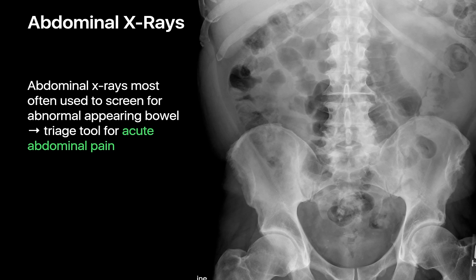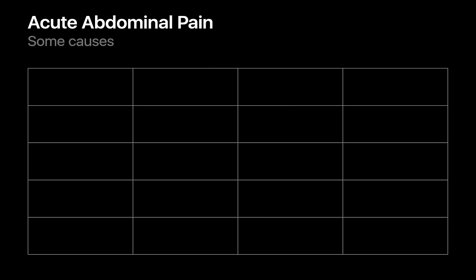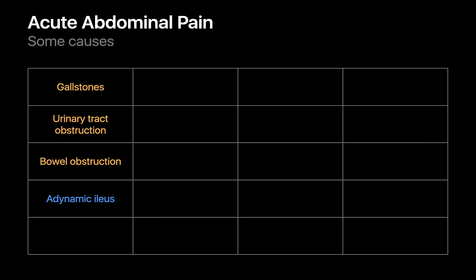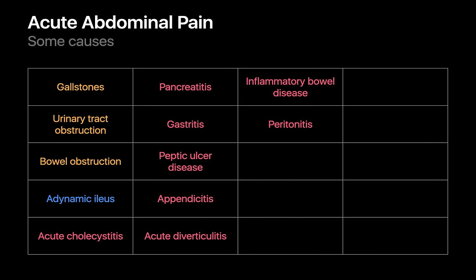That's why abdominal x-rays, despite their limitations, remain a useful triage tool for evaluating patients with acute abdominal pain. The differential diagnosis for acute abdominal pain includes obstructive disorders like gallstones, urinary tract calculi, and bowel obstruction; neurogenic disorders like adynamic ileus; and inflammatory disorders such as acute cholecystitis, pancreatitis, and appendicitis.